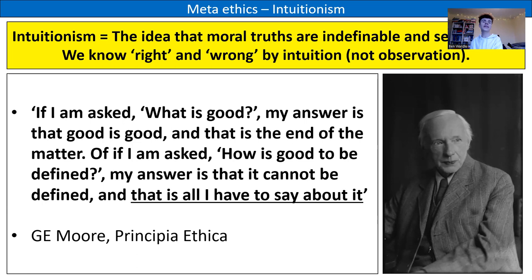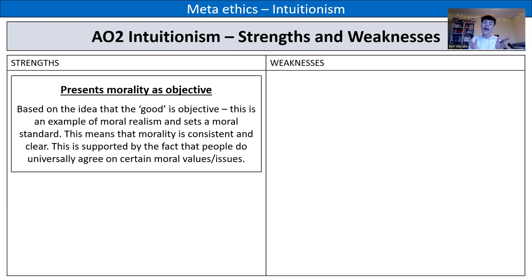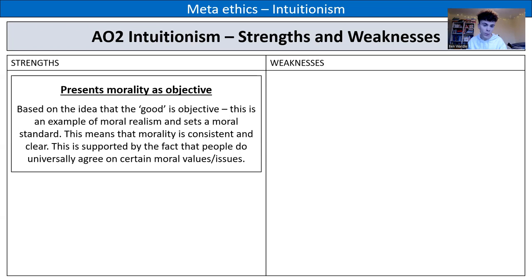Do you agree with Moore that we can't define the good — that it's just intuitively known and self-evident? Let's do our evaluation, starting with strengths. A strength of intuitionism is that it presents morality as objective — the good is the good, full stop. It's not about your idea of the good or their idea of the good; there is this objective good that is intuitively known and self-evident to us all. So this is an example of moral realism. It sets the moral standard and means morality is consistent and clear.